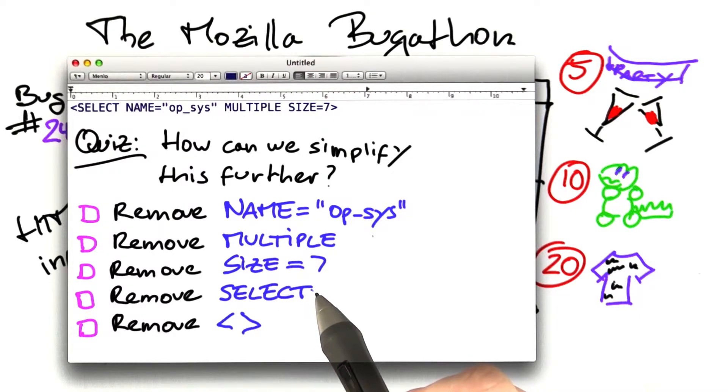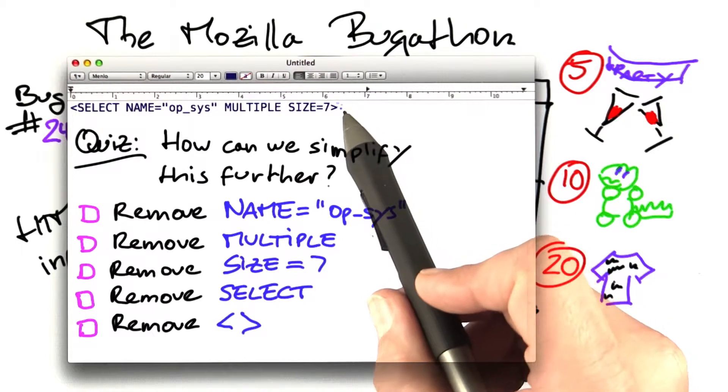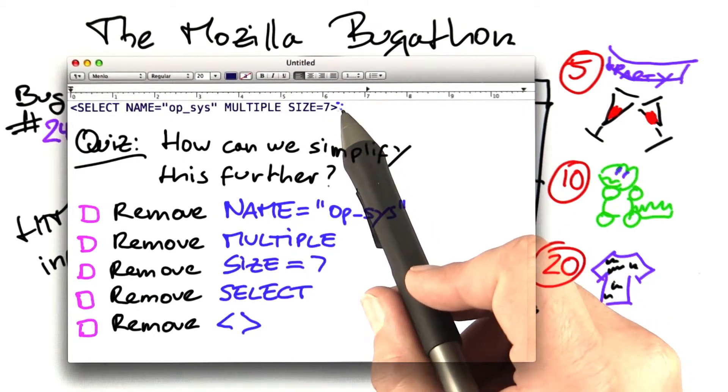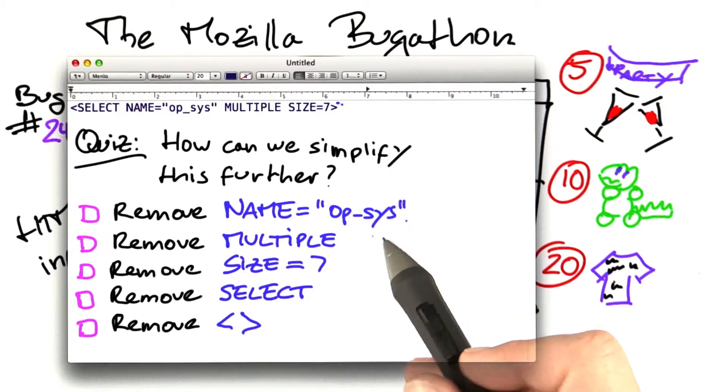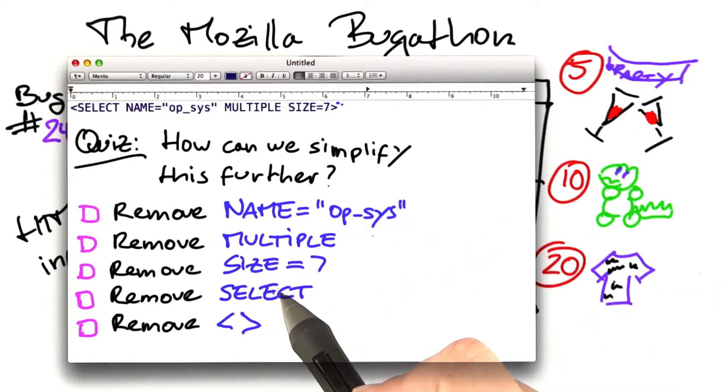If we remove the angled brackets, then all of this HTML tag is going to turn into regular text. This will create a very different behavior in Mozilla, and therefore we will probably not reach the code which originally caused the failure.